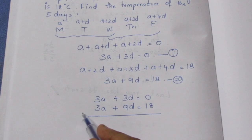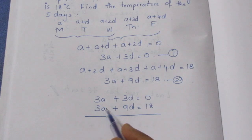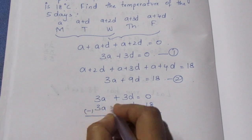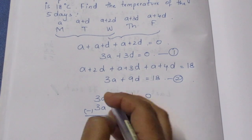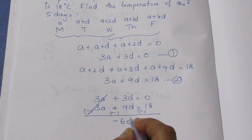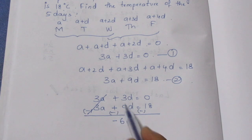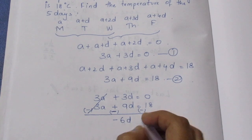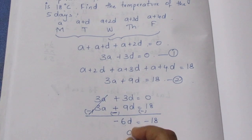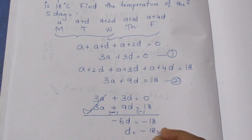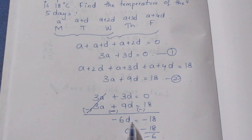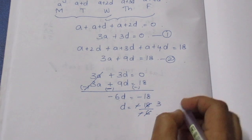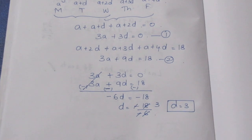Subtracting equation 1 from equation 2: 3a minus 3a cancels out. Then 9d minus 3d gives 6d, and 18 minus 0 gives 18. So 6d equals 18, which means d equals 3. The common difference d is 3.